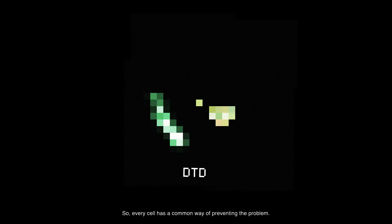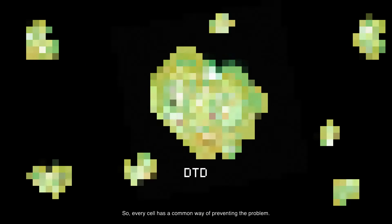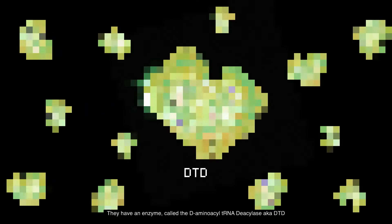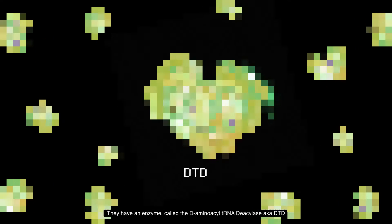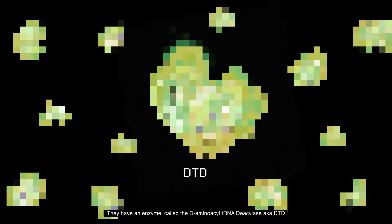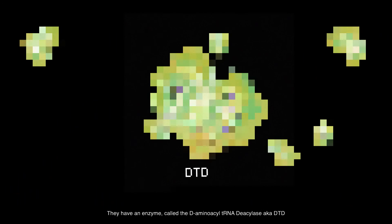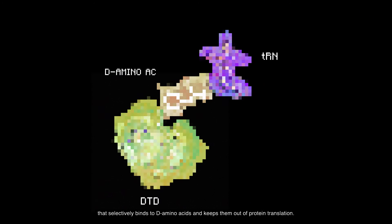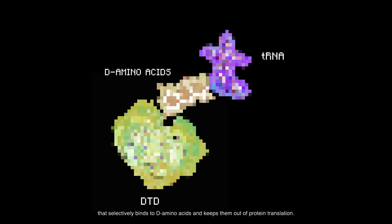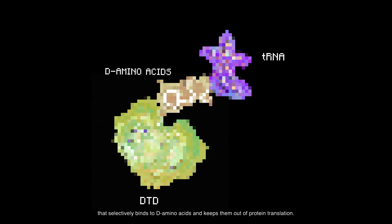So every cell has a common way of preventing the problem. They have an enzyme called the D-aminoacyl tRNA deacylase, also known as DTD, that selectively binds to D-amino acids and keeps them out of protein translation.